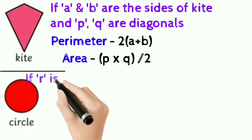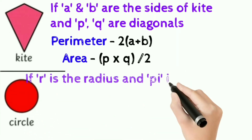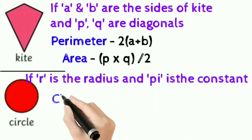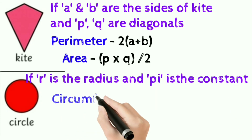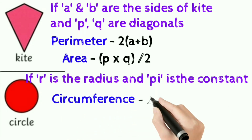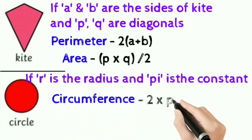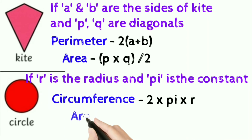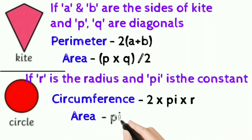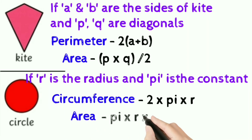Circle: if r is the radius of the circle and pi is the constant, circumference of the circle is 2πr, that is 2 into pi into r, and area of the circle is πr squared, that is pi into r into r.